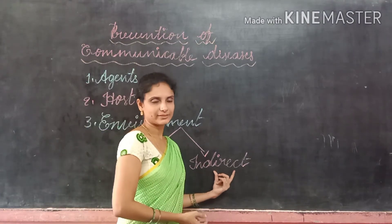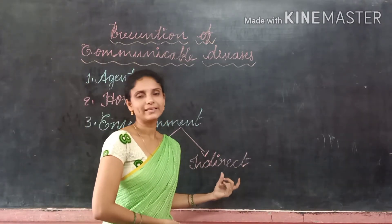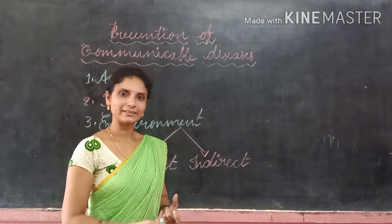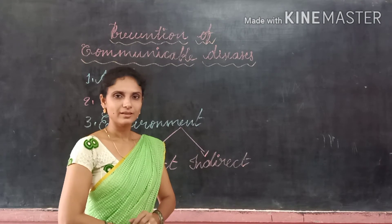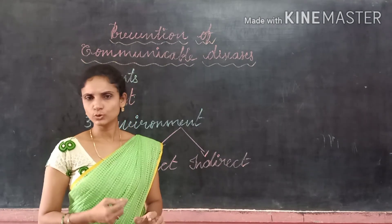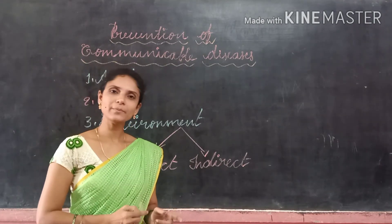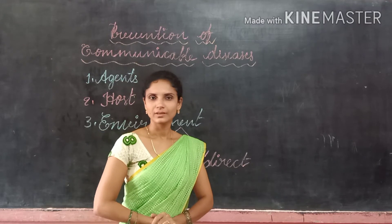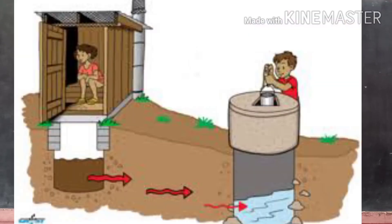In the indirect method, through contaminated objects we may get the disease. Another indirect method is through contaminated food and water — if you take contaminated food and water, you may get the disease.